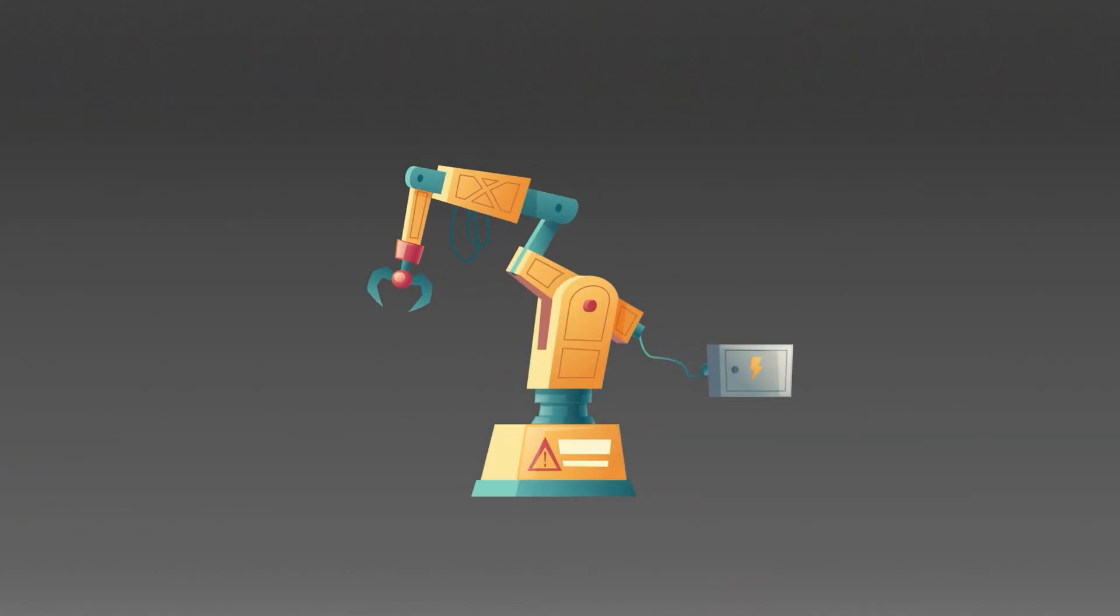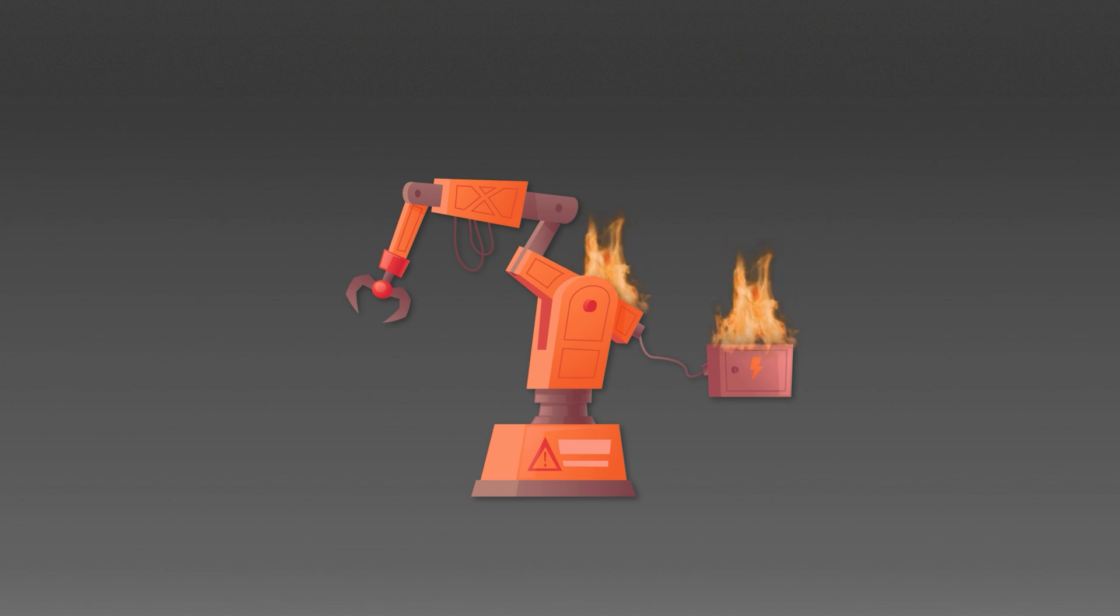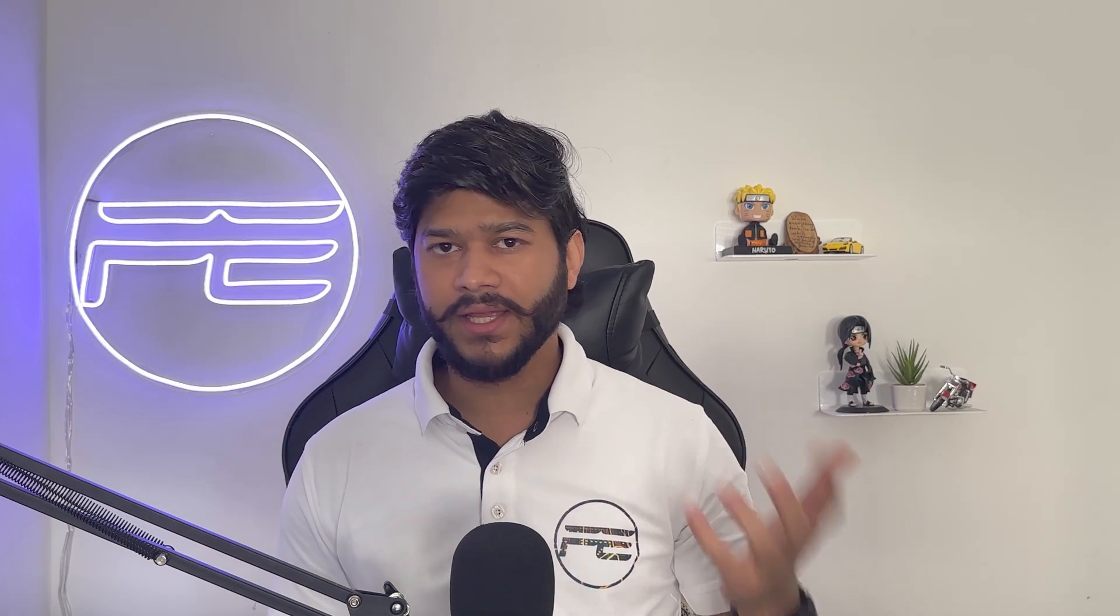Imagine this, you're running a factory and everything is going smoothly, until one machine overheats because of a short circuit and it starts a fire. You might be thinking, could this disaster have been prevented? Well, yes, that's where an overcurrent sensing circuit comes in.